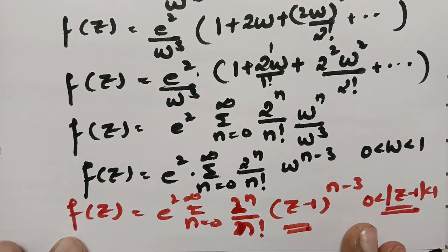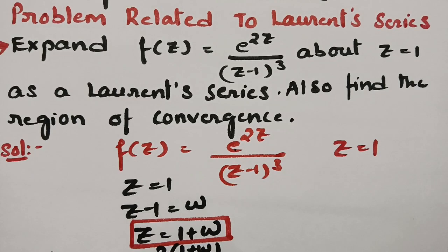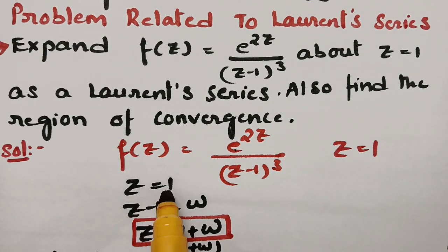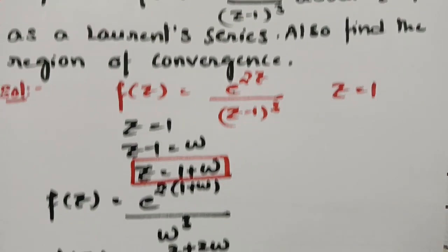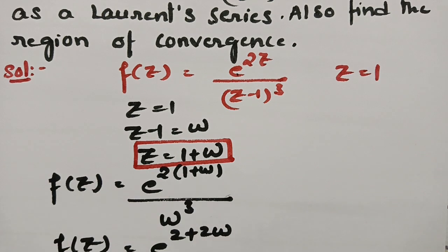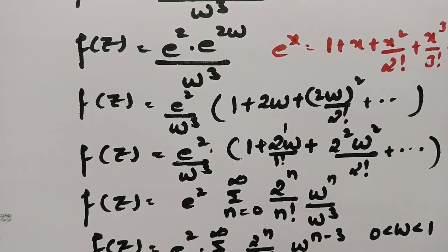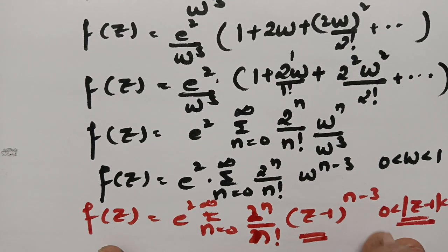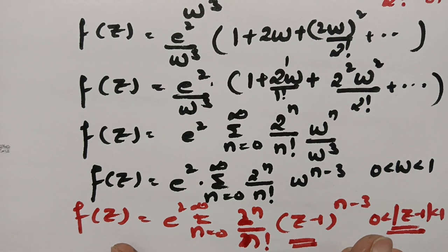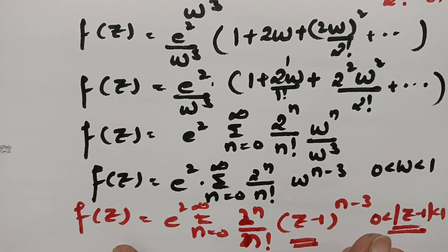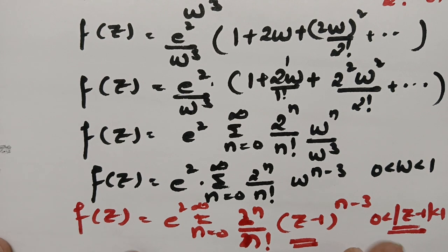This is how we expand using Laurent series. First, identify the expansion point z = 1 and substitute w = z - 1, so z = 1 + w. Transform f(z) in terms of w, apply the e^x expansion, then substitute back. Please practice this — it is a very important question. Please go through the playlist; many topics are uploaded and will be very useful for your preparation. Thank you so much for watching and staying till the end.